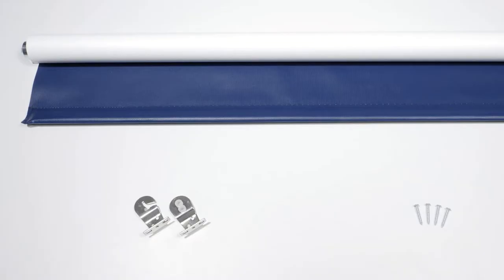All rollers have the same basic parts, the shade itself and the necessary mounting hardware. Today, we're installing a roller shade with an exposed roll, as you can see here.